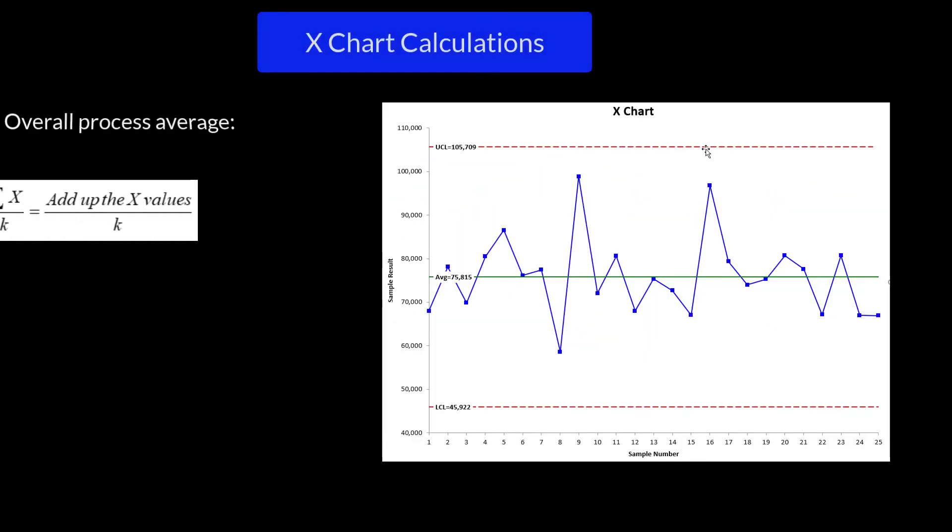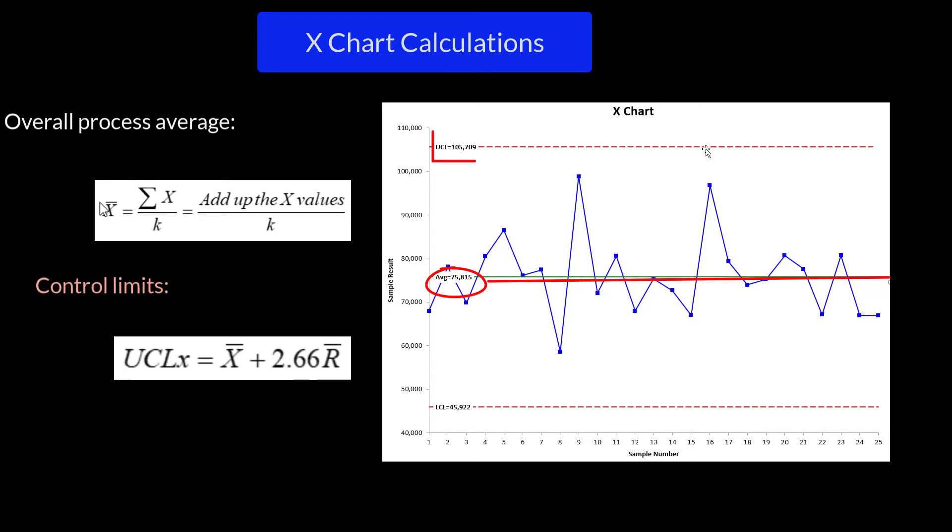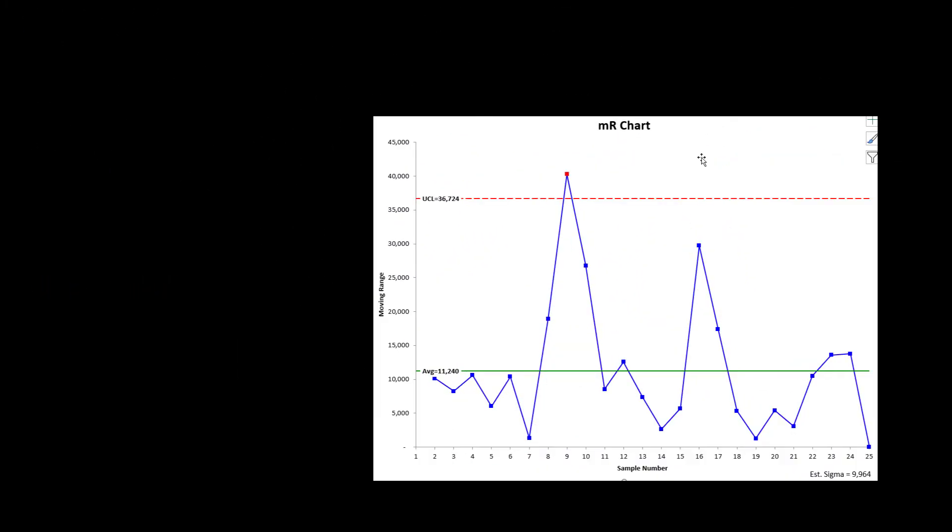Well, what are the calculations? With the X chart, you calculate the X bar value of the overall process average. It's the sum of the X values divided by K, where K is the number of samples we have. Then you calculate control limits. The upper control limit is that average X plus 2.66 times the average range, which we'll show in a minute how to calculate. The lower control limit is the same thing, except it's minus.